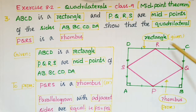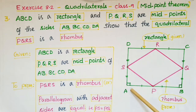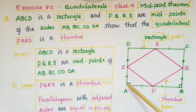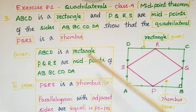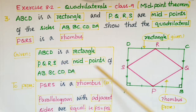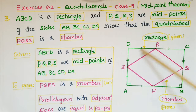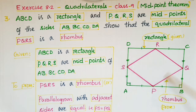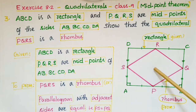So here ABCD is a rectangle. A rectangle is a parallelogram where opposite sides are equal and each angle is 90 degrees. ABCD is a rectangle and PQRS are midpoints of the sides of the rectangle. If you join these midpoints you will get a quadrilateral, and here we have to show that this quadrilateral is a rhombus.